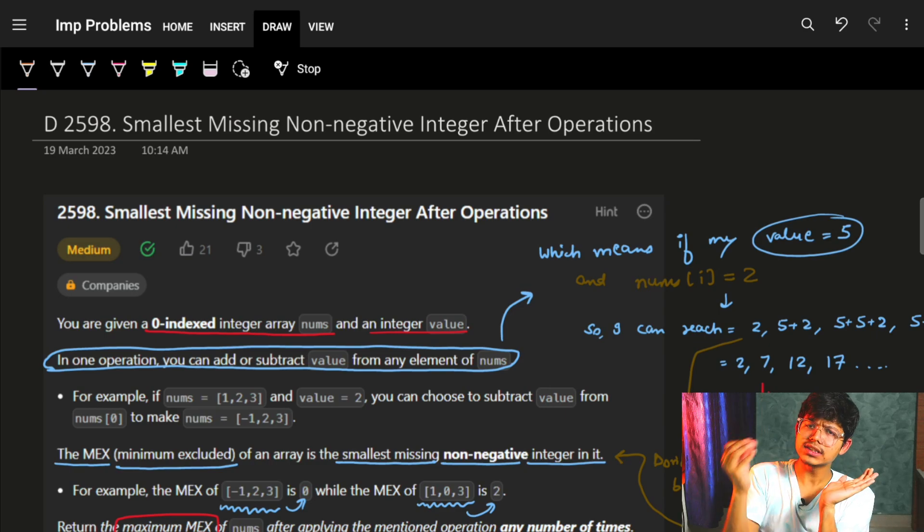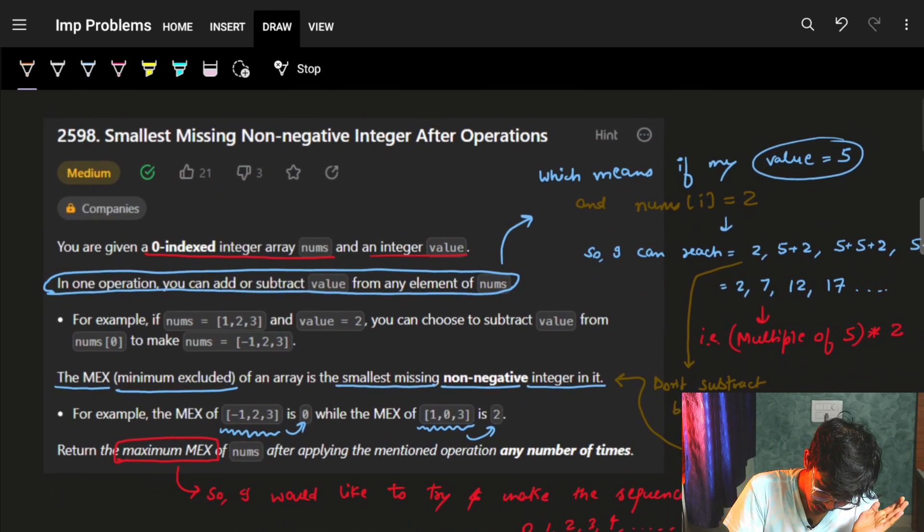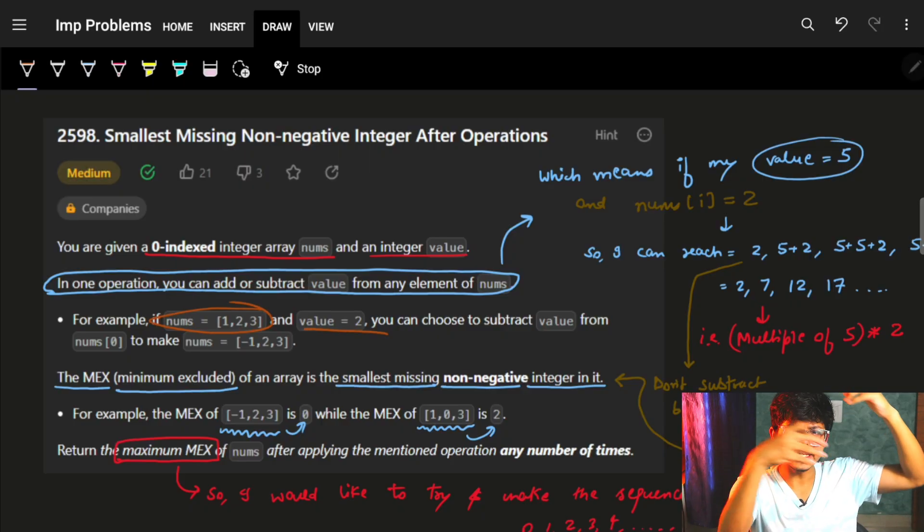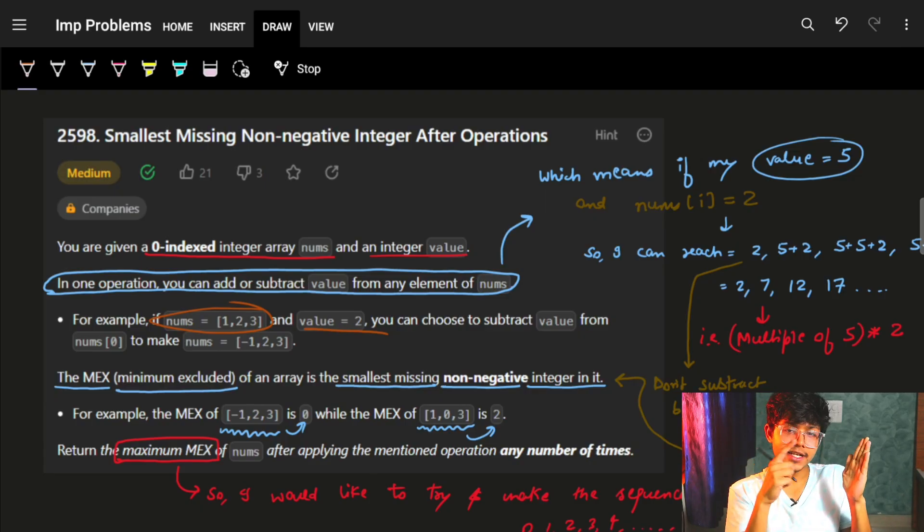If we have this nums array and we have this value, we can add or subtract from any element. For example, if we have 1, 2, 3 and the value is 2, I can choose any element. In this case, I choose 1 and I subtracted 2. So 1 minus 2 is minus 1, so I got a minus 1.